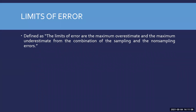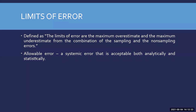The role of the laboratory in minimizing errors caused in pre-analytical and post-analytical phases is very significant, even though those areas are not directly under the control of the lab. Now, limits of error are the maximum overestimate and the maximum underestimate from the combination of sampling and non-sampling errors. Errors can be categorized in many ways; this definition categorizes them in sampling and non-sampling areas.